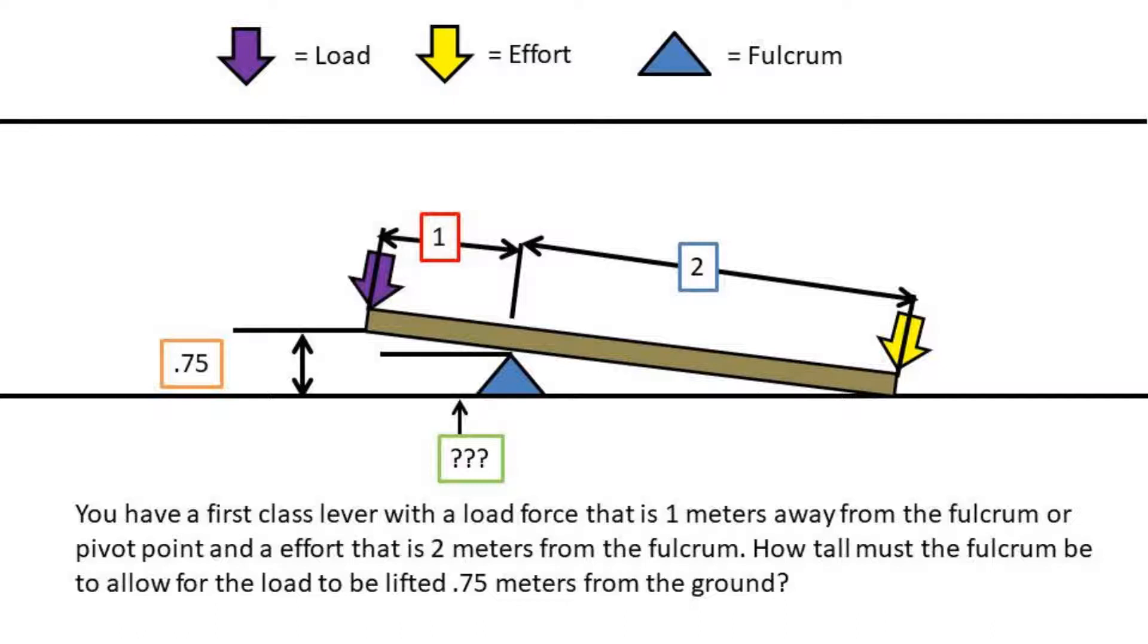So you have a first class lever with a load force that is 1 meter away from the fulcrum or pivot point and an effort that is 2 meters from the fulcrum. How tall must the fulcrum be to allow the load to be lifted 0.75 meters from the ground?